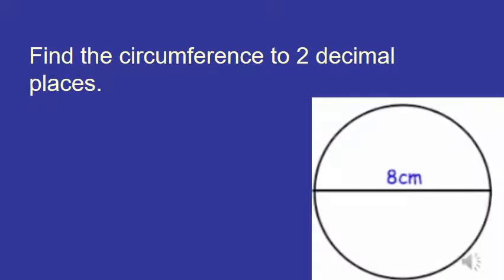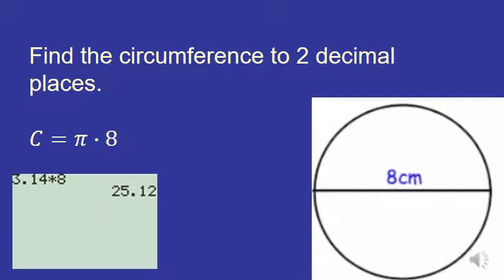Here it asks us to figure out the circumference to two decimal places. I'm going to pause for just a second here and let you think about that and see if you can figure it out. This time they're telling us the diameter is 8, and since we know that, we don't need to multiply by 2. It's just π times the diameter. You notice I typed into the calculator 3.14 times 8, and I could say that two decimal places the circumference must be 25.12 centimeters.